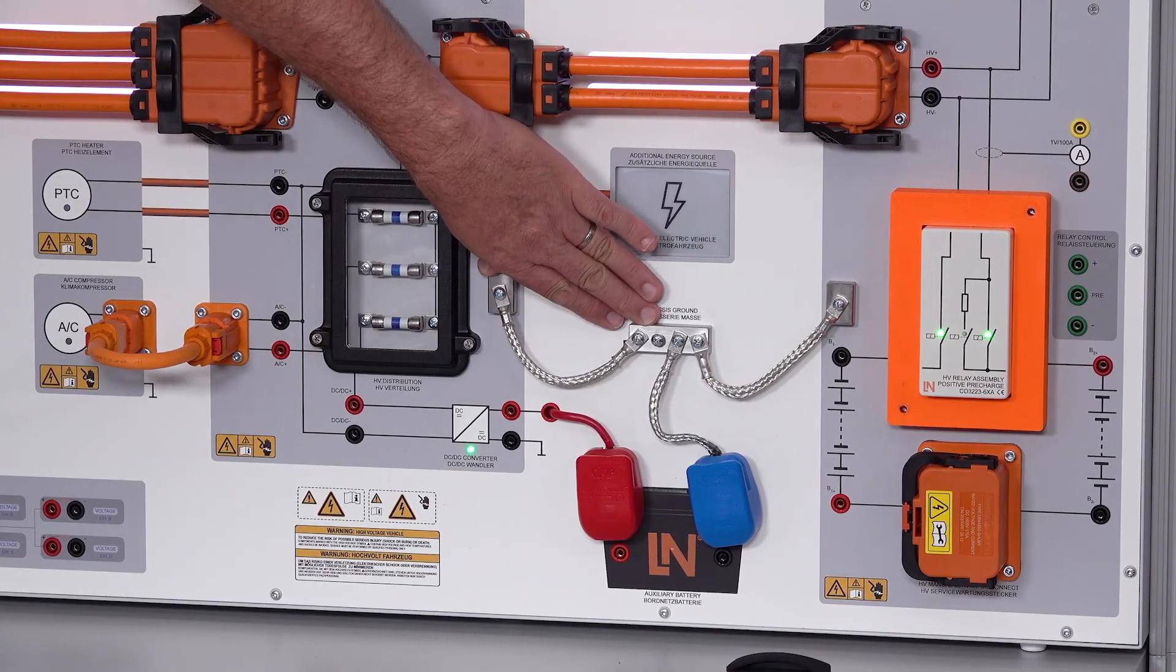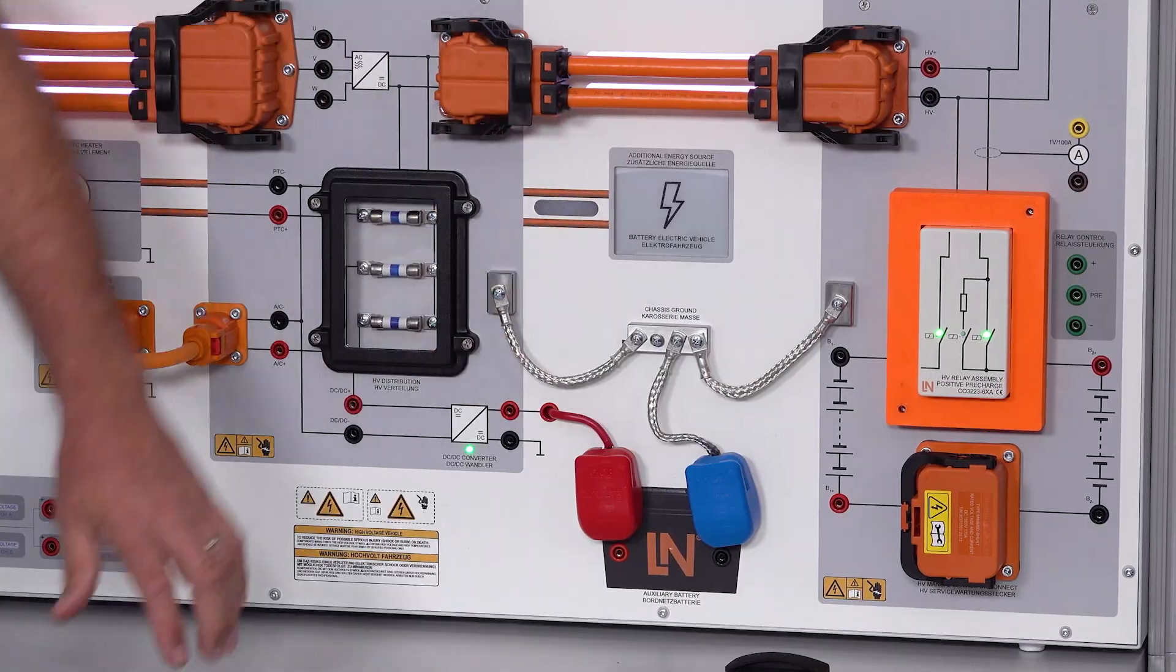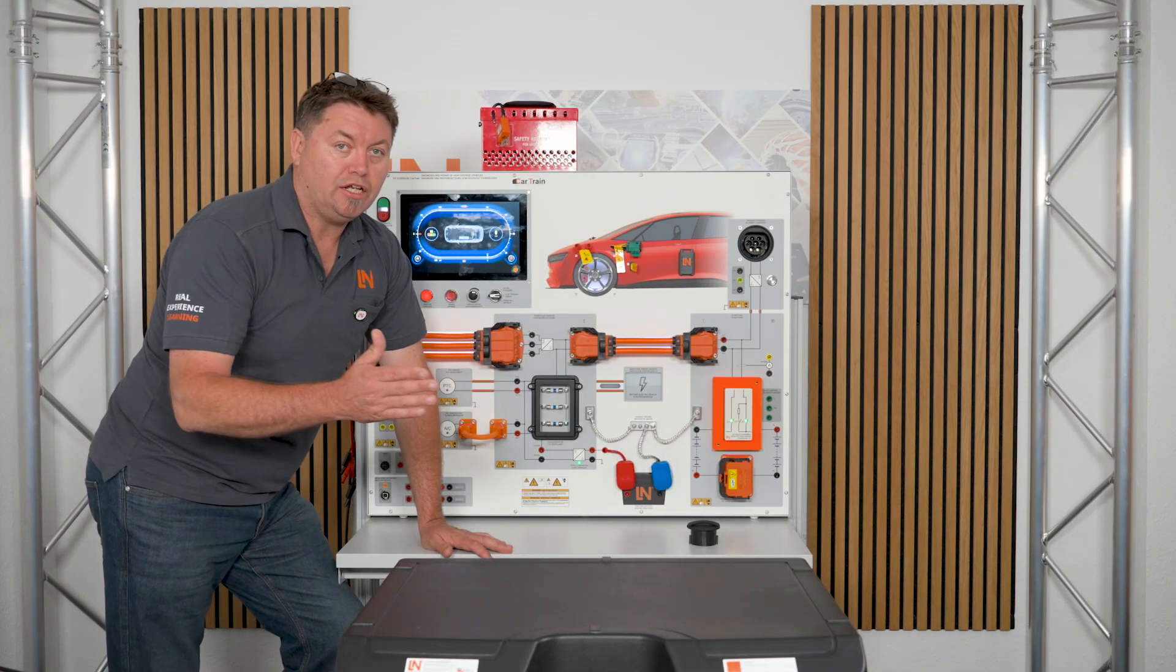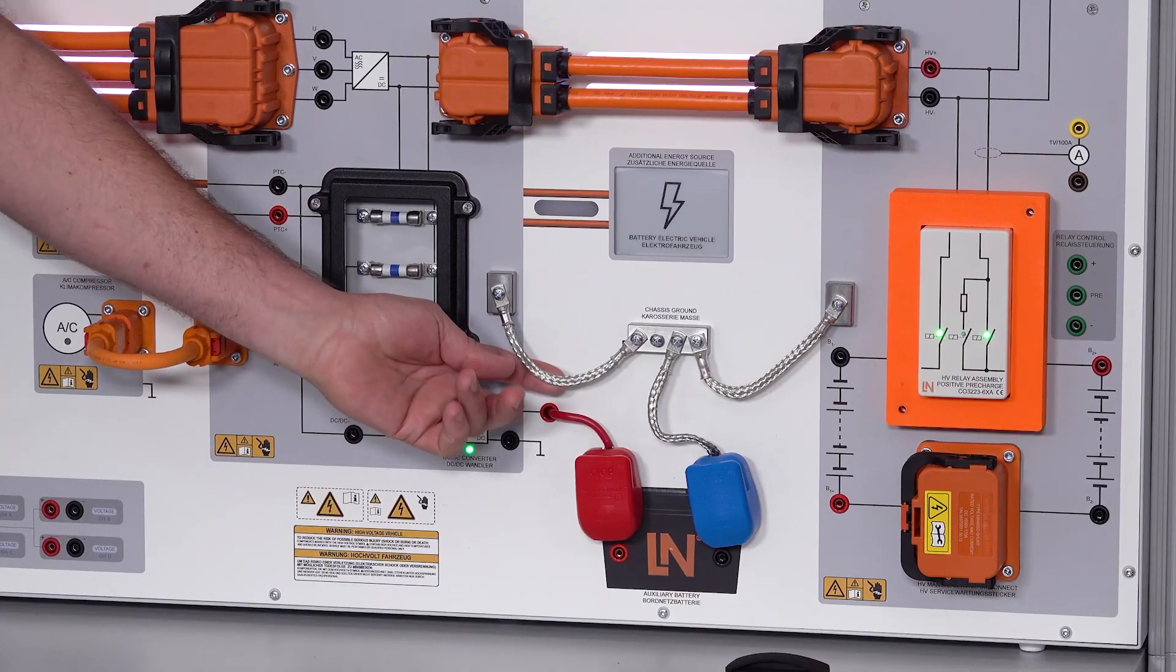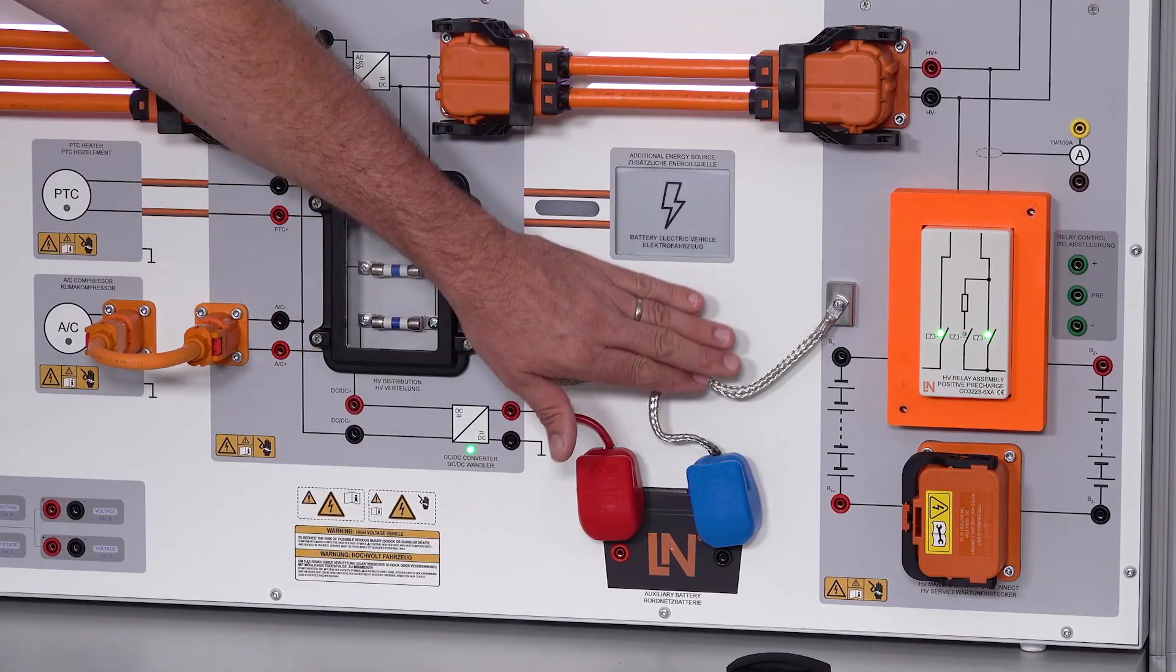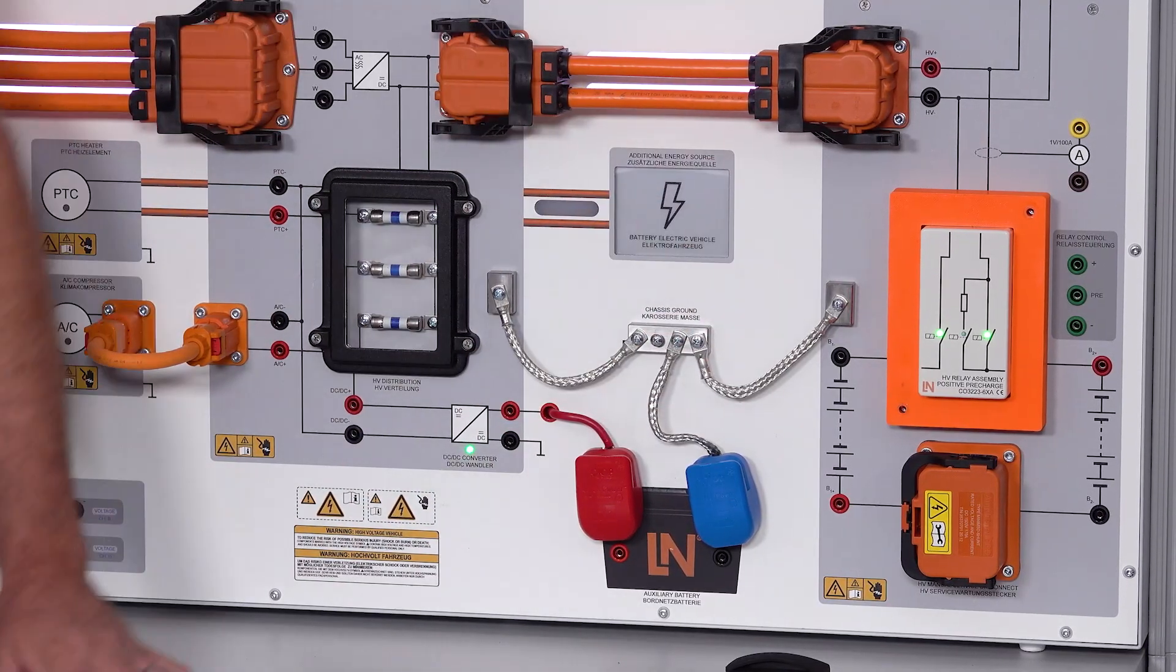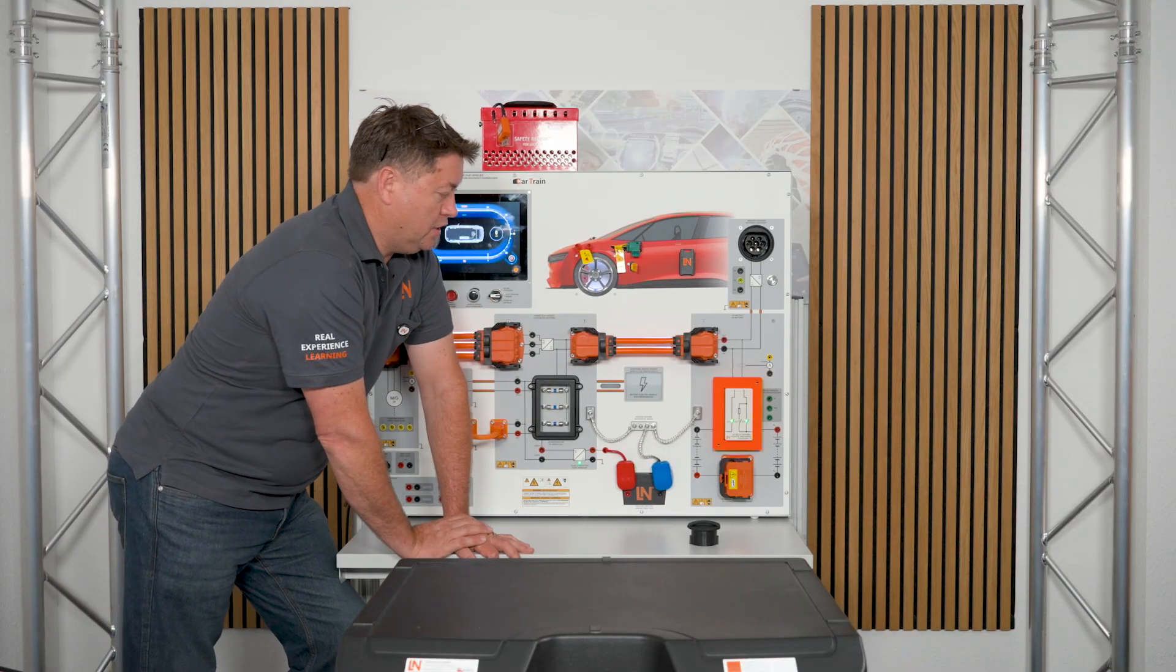So all of these vehicles have potential equalization or bonding, which equalizes any of this potential across the components. This is a very important safety factor and something where we can also simulate with faulty cables. We can simulate situations where everything is okay or where the cables are defective.